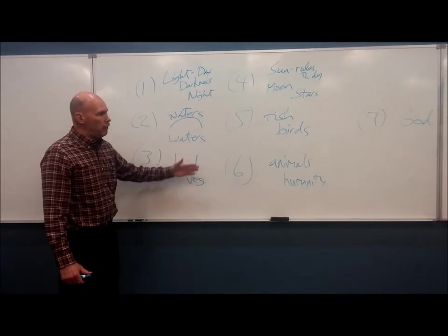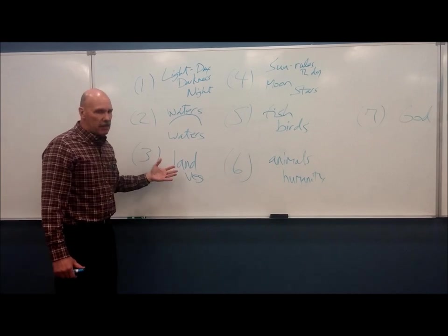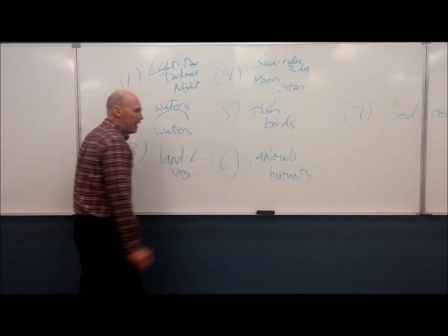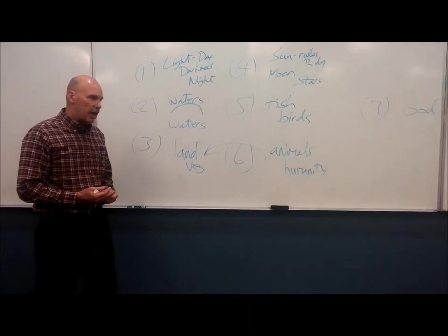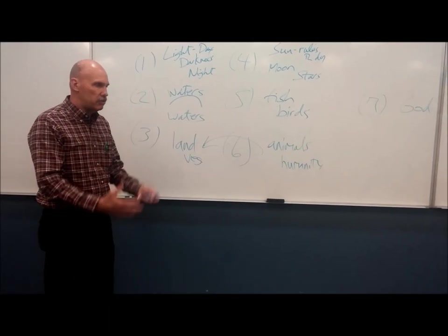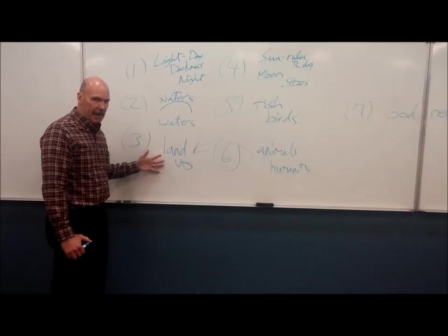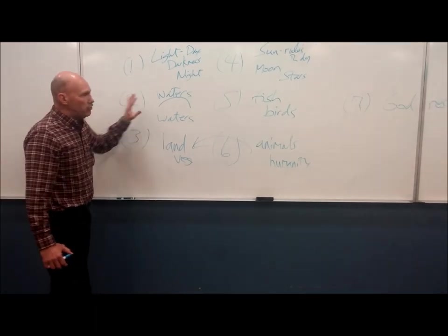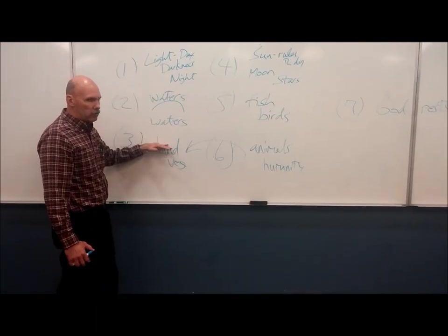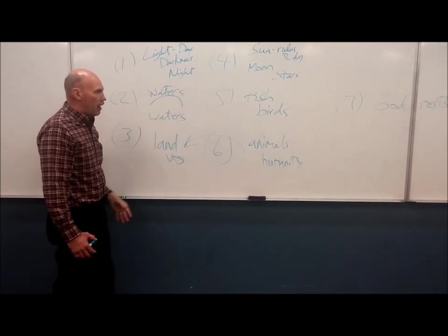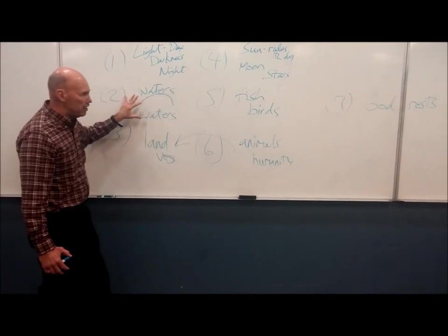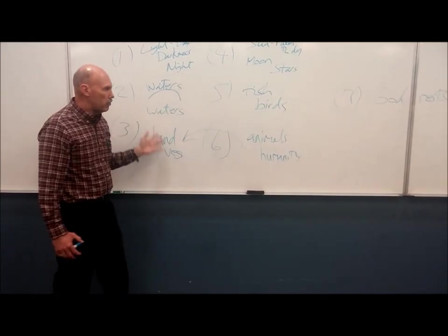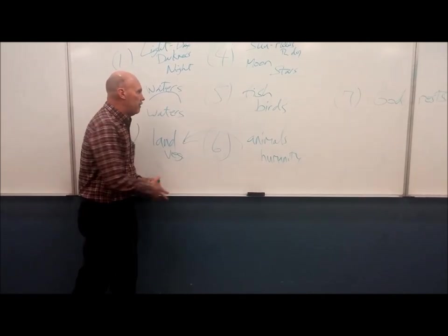We see this especially if we start from the bottom and work back up. On day 3, God creates the land and the vegetation. Then on day 6, God fills the land with animals and humanity and tells us to be fruitful and multiply. God gives humanity dominion over everything that moves across the face of the earth. So day 3, God has created the habitat or domain for humanity to live in, to move about, to exercise dominion over. Same thing with day 2 and day 5 — God creates the waters above and below, and on day 5 he fills these habitats with creatures. The fish and the birds are created, and God blesses them and tells them to be fruitful and multiply and to fill their habitats.